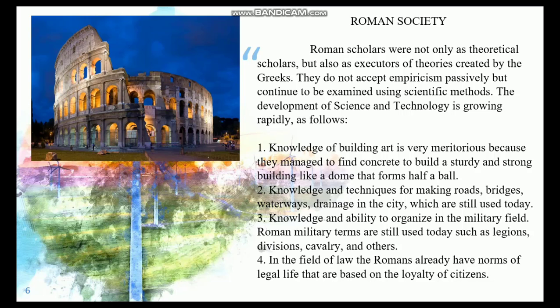3. Knowledge and ability to organize in the military field — Roman military terms are still used today, such as legions, divisions, cavalry, and others. 4. In the field of law, the Romans already had norms of legal life that are based on the loyalty of citizens.